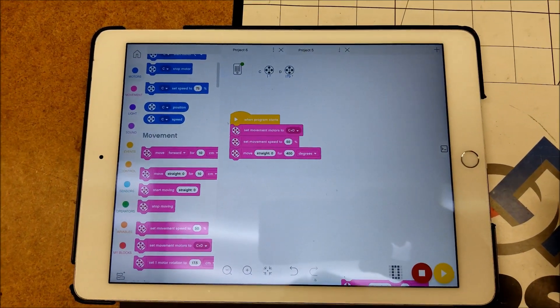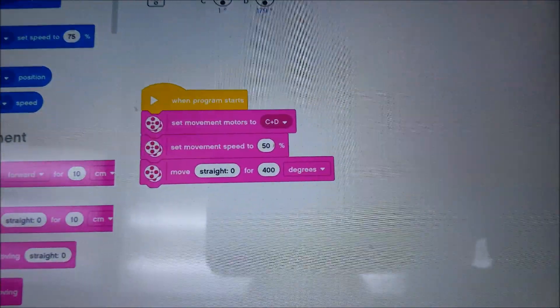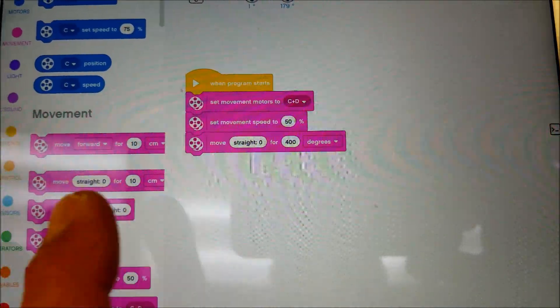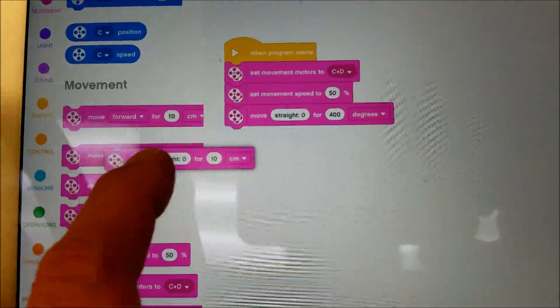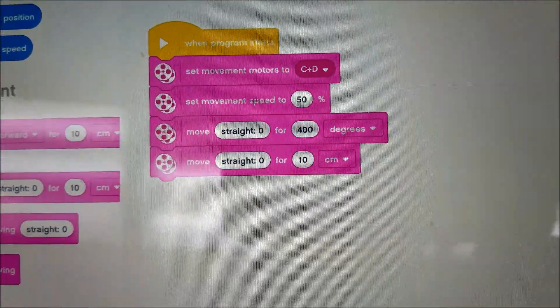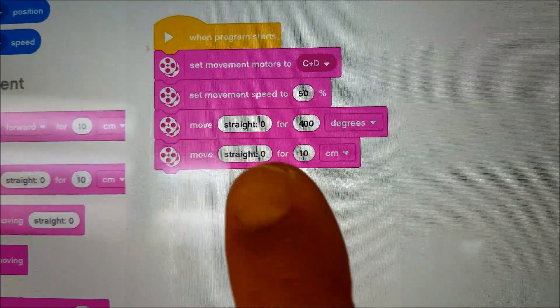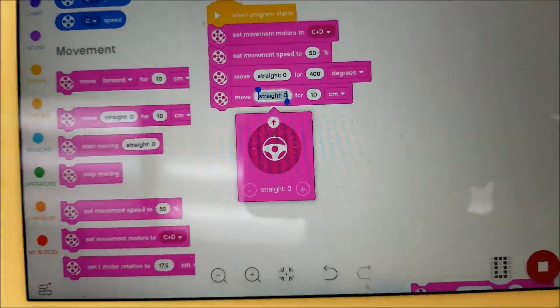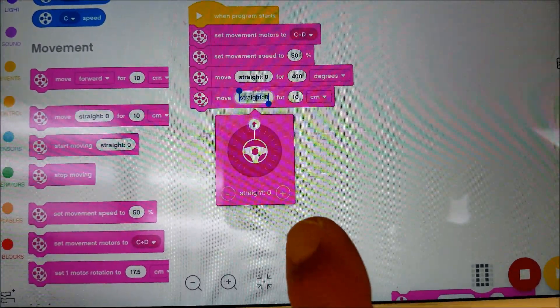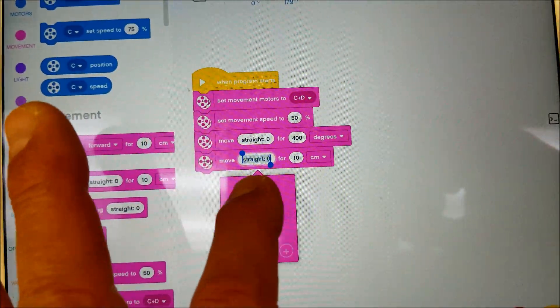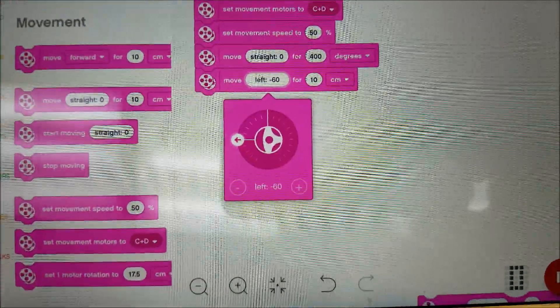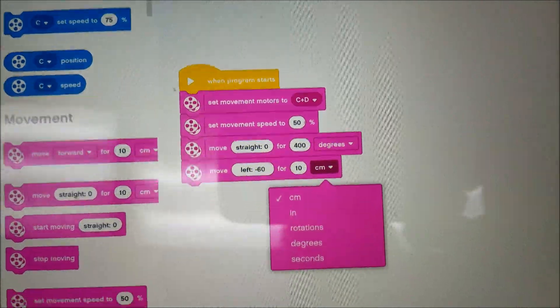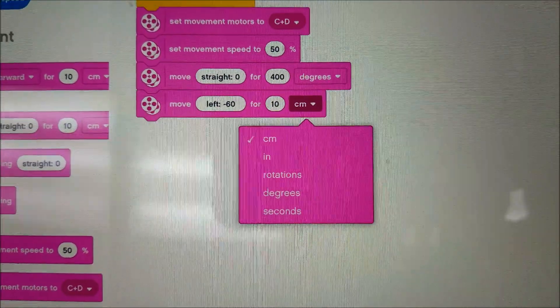If you notice, this built-in gyro pops up and I can turn it so that'll make it turn left, and then I can also tap there and still get the rotations, degrees, or seconds.